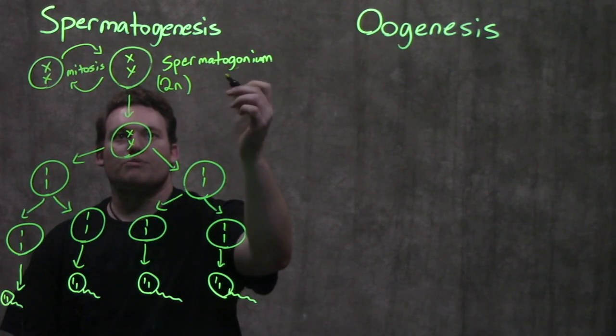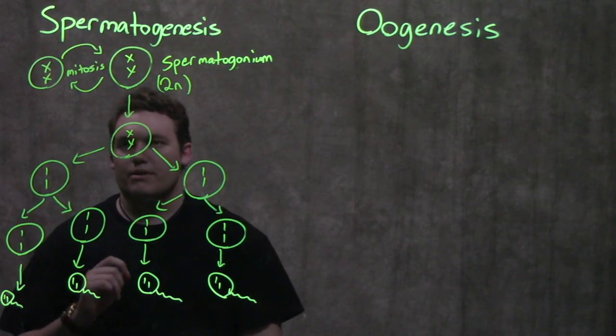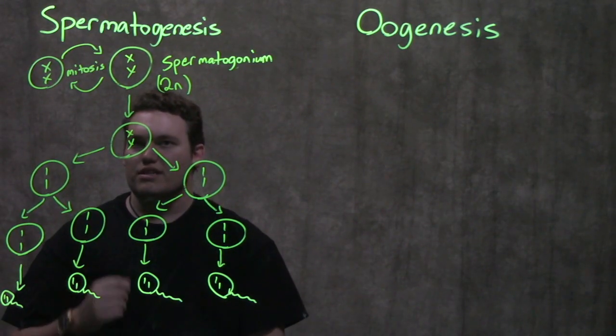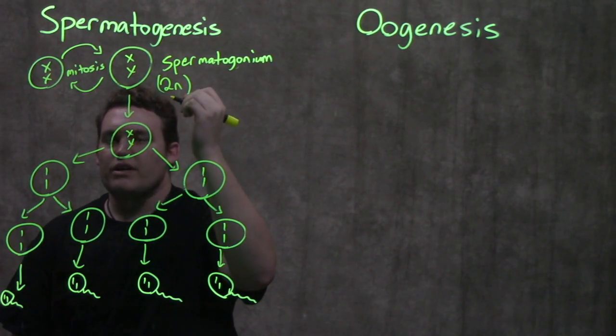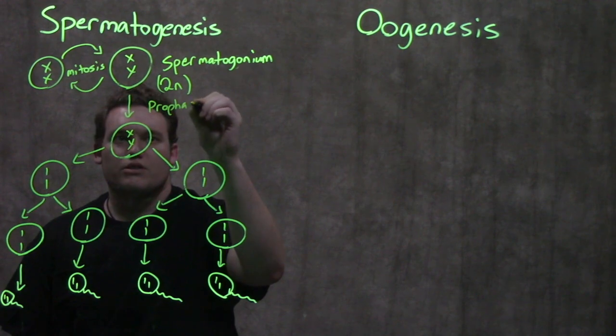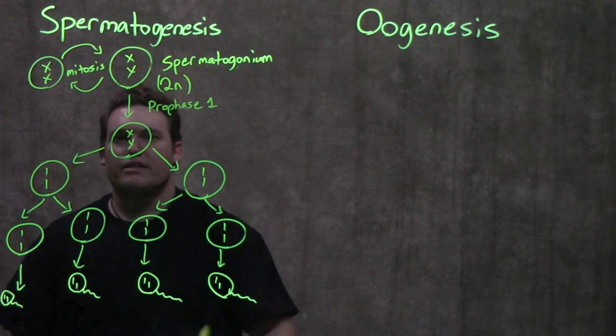Starting with the spermatogonium, what's interesting is we call it something different when it decides to go through meiosis. We can call this prophase 1, but what's important here is that